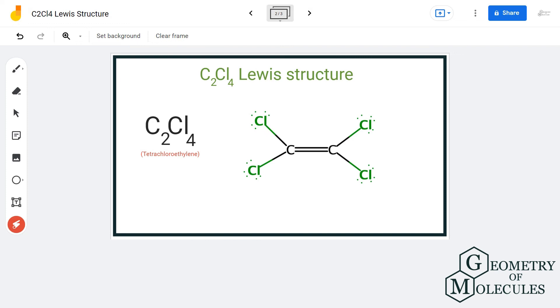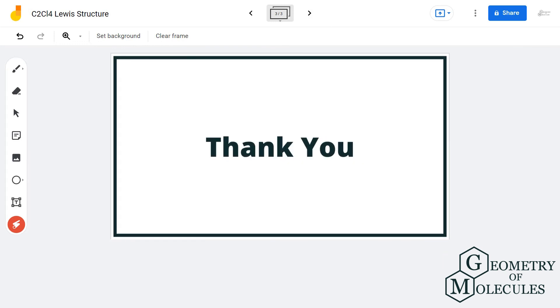Now this is the Lewis structure of tetrachloroethane in which carbon atoms form double bonds with each other to have complete octets and forms single bonds with two chlorine atoms at a time. I hope this video helps you to understand the C2Cl4 Lewis structure.